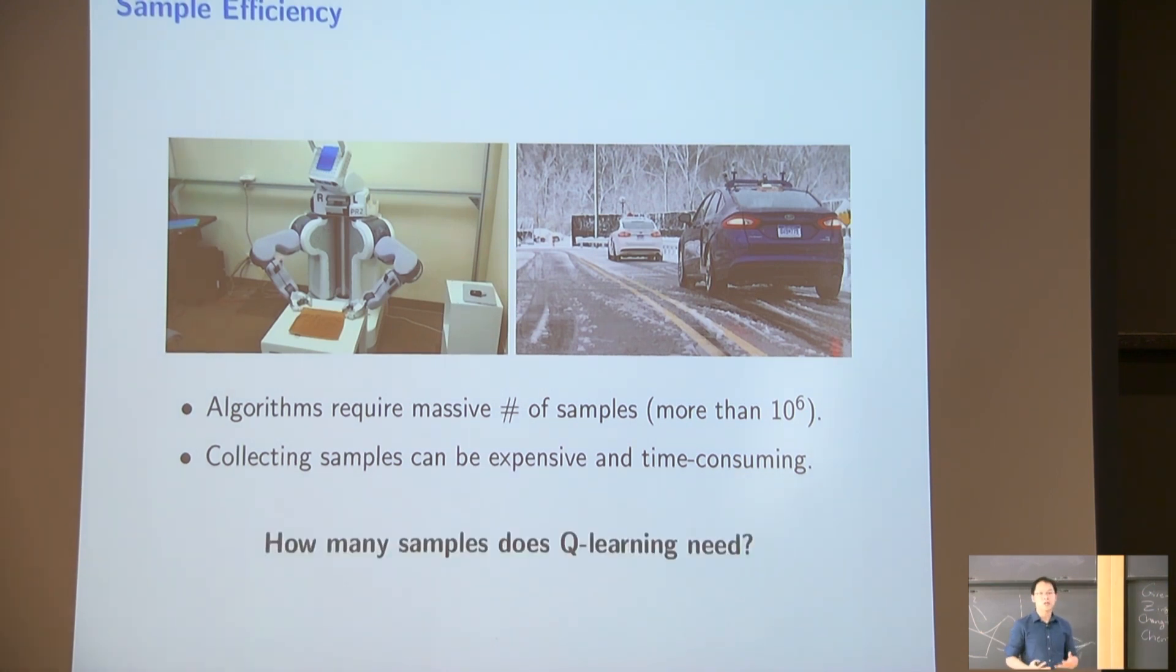So one very basic question people would ask, since Q-learning is a very basic algorithm, has been known for a lot of years. So the first question we would like to know is how many samples does Q-learning need to solve this reinforcement learning problems?